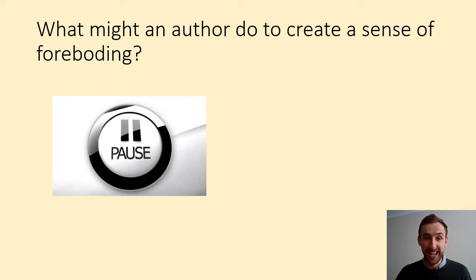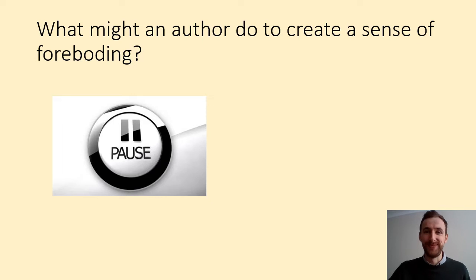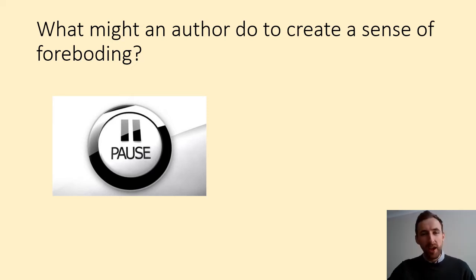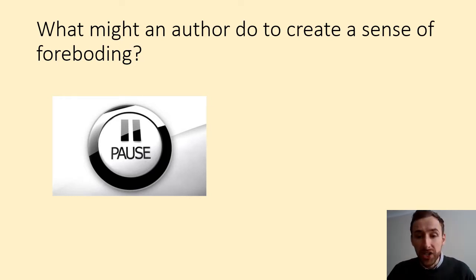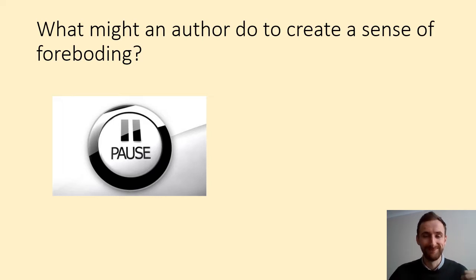The final question I want you to consider here is: what might an author do to create a sense of foreboding? Pause the video to write down your ideas and then press play to continue. Well done, Year 5. I'm sure you noticed that many of the same things you would do to create foreboding are the things you would do to build suspense — for instance, putting a character in a position of jeopardy or danger, building the pace, creating uncertainty in the plot, and hinting at what might happen next. All of those are things that an author might do to create a sense of foreboding.